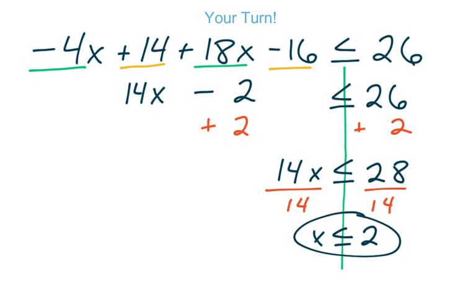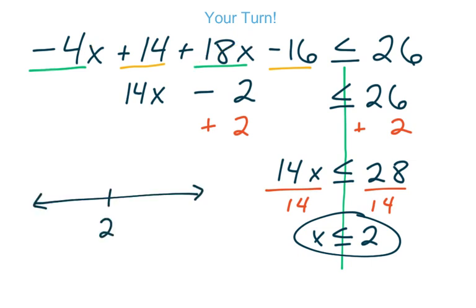Quick tip: I would plug in 0 since it's less than 2 and the easiest number to work with. Plugging in 0 gives you 14 minus 16, which equals negative 2, and negative 2 is less than 26 — true. For the graph, we use a closed circle on the 2 because it's less than or equal to, and we shade to the left since those numbers are less than 2.